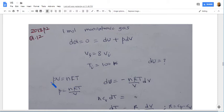Since an ideal gas, the equation is pV = nRT. So from this we get p = nRT/V. dU is minus pdV from this equation. So it is minus nRT/V into dV.